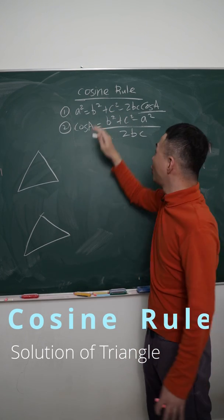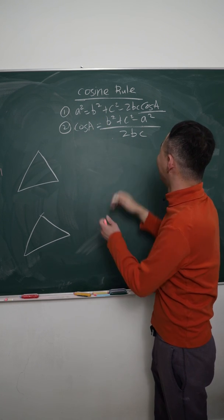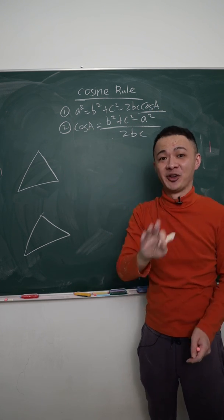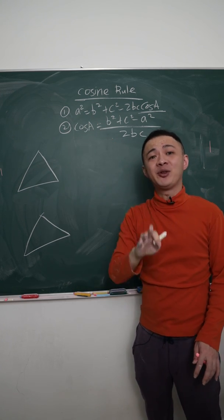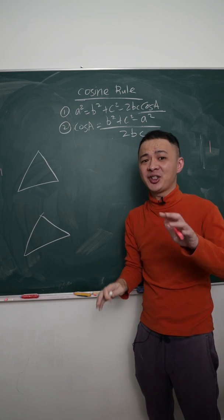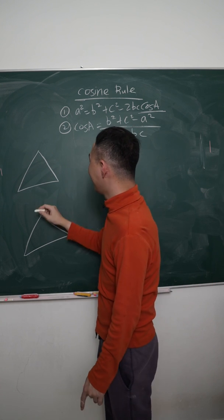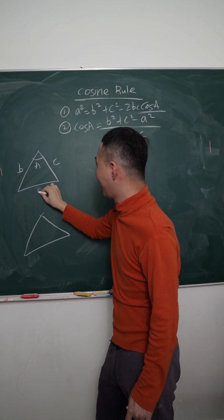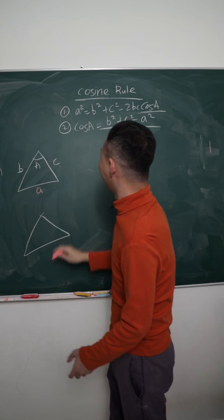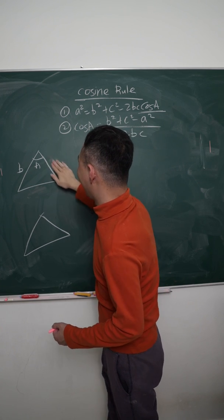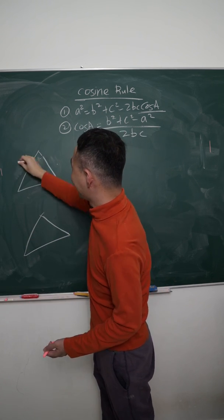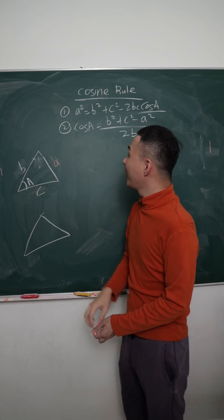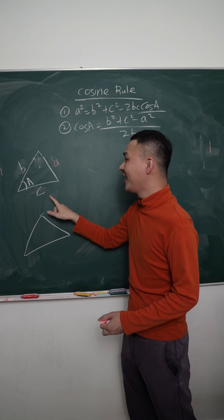To master the cosine rule, there are two formulas, but both are actually the same — the second formula is just the first formula rearranged with cos A as the subject. For the first formula, you need two sides and one angle between them, and you use it to find the missing length.